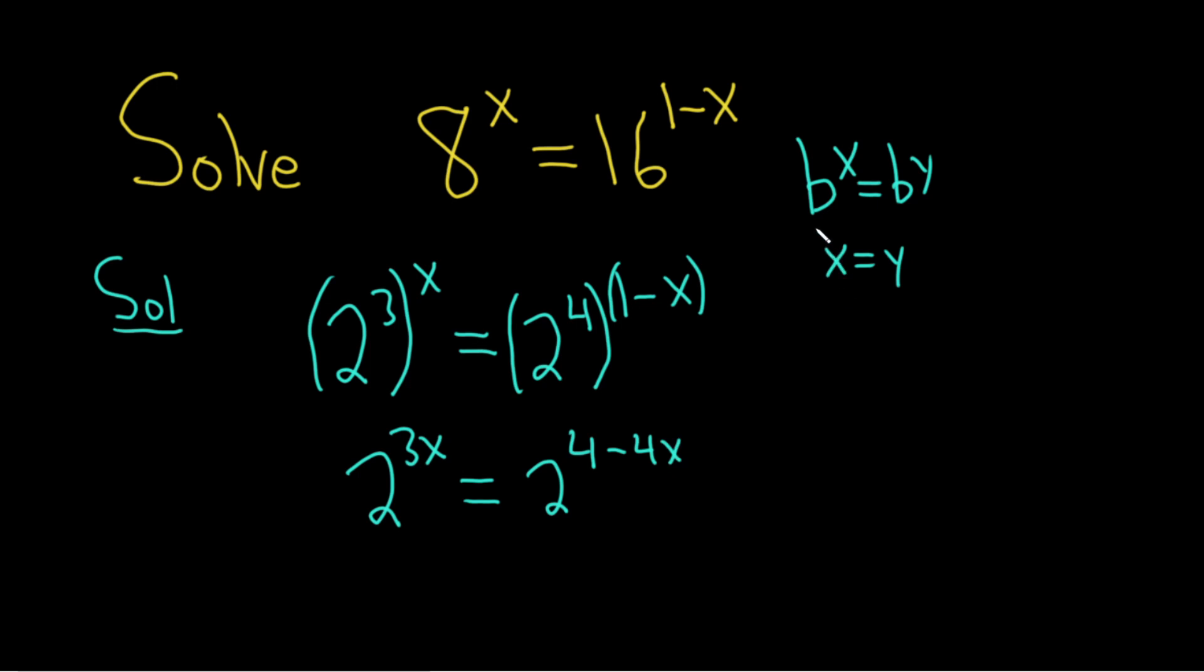Now we're in the situation where we can use this formula. So now you can drop the 2's. So we have 3x and that's equal to 4 minus 4x.